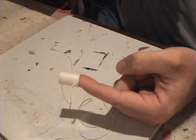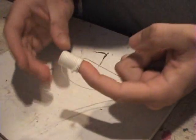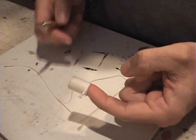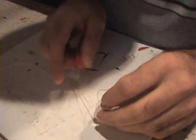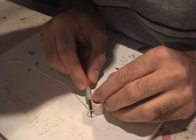And then let that dry. Once the CA is all dried, grab your knife and carefully trim it off.